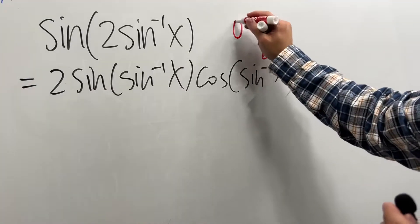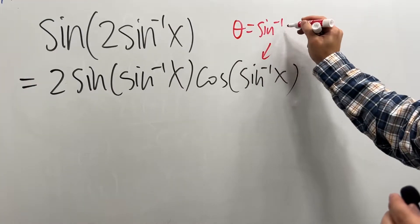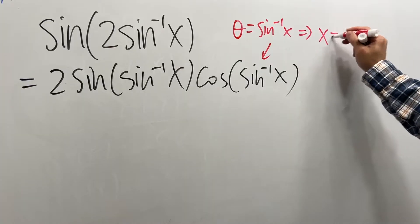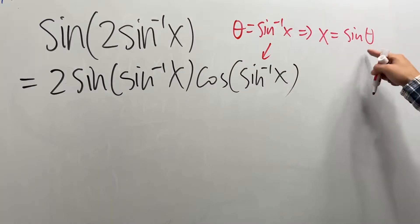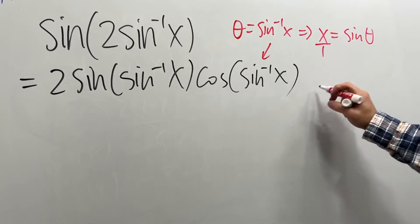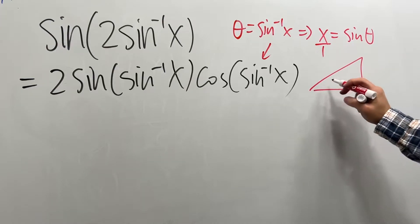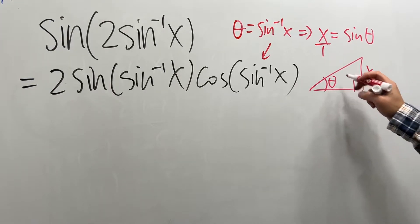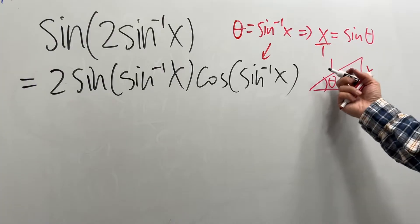What you can do is look at this and call that theta. Theta equals inverse sine x, meaning x equals sine of theta. And that means x over 1 equals that. So I can draw a right triangle like this. Here's the right angle. Here is the angle theta. X is right here. 1 is right here because that's opposite over hypotenuse.